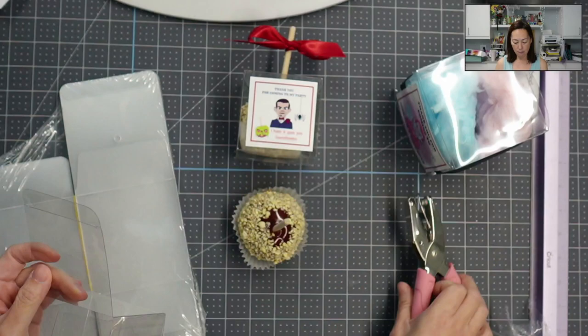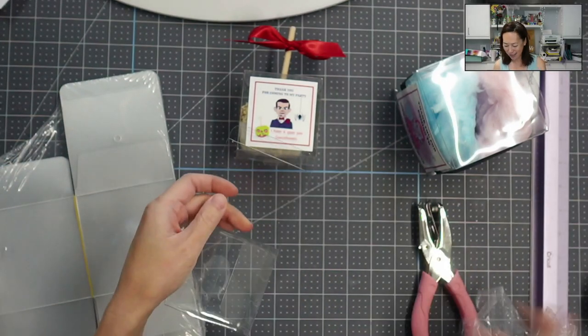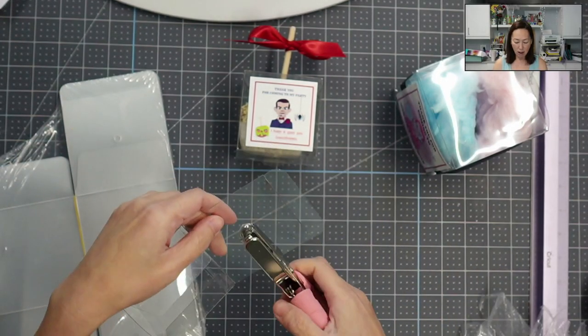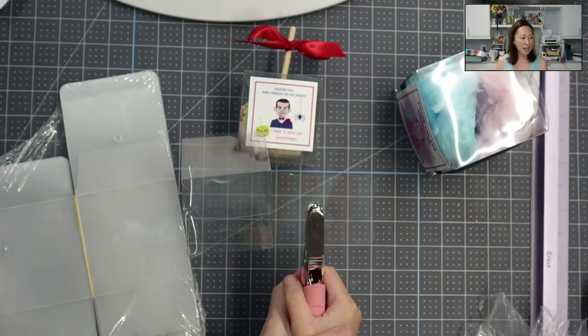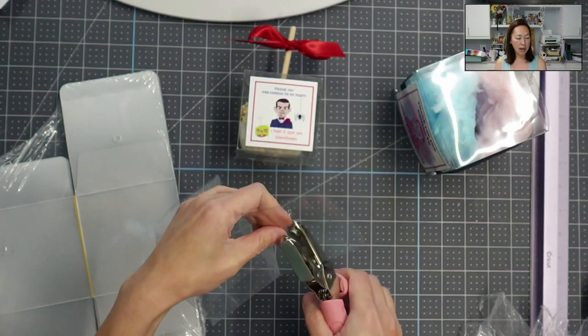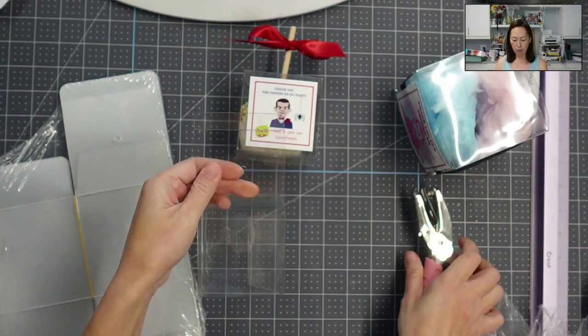So I recommend you getting a hole puncher. And I just did this on each one. So in the center, hole punch and then pull this out and you're good.